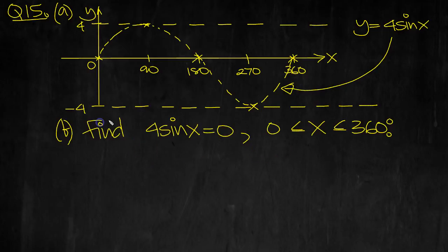So when does it equal 0? Well we can just read it off. Equals 0 here. x is equal to 0 degrees, 180 degrees, and 360 degrees.